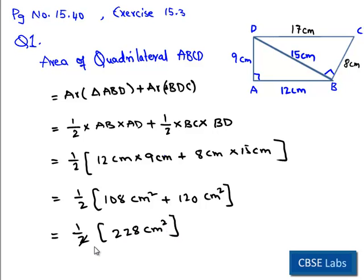So we cancel 2 in 228 as 114 times. Therefore, we get area of quadrilateral ABCD is 114 centimeter square. Thank you.